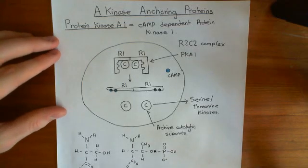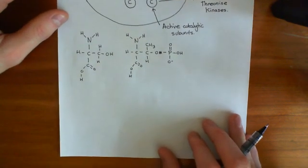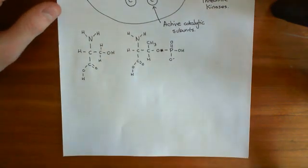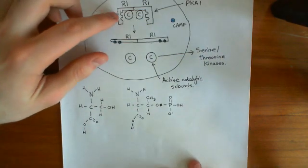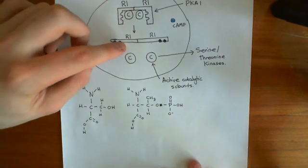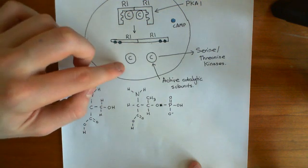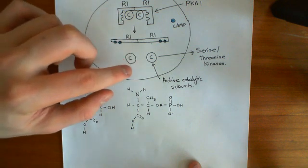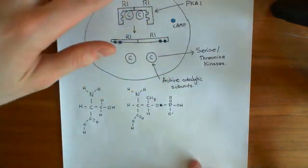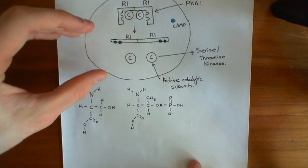Welcome back to this next video on A-kinase anchoring proteins. We've seen how Protein Kinase A1 is this enzyme which is free within the cytoplasm, and how when cyclic AMP goes up it inactivates the regulatory subunits so they dissociate from the catalytic subunits — activating the catalytic subunits because they were being suppressed — and how these catalytic subunits can have an effect on a huge number of different proteins, so the specificity is quite low in this case.